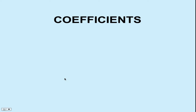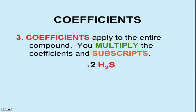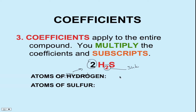Rule number three deals with coefficients. Coefficients are the big numbers out in front, whereas the little number behind the atom is the subscript. The rule says we take the coefficient and apply that number to every single element in the whole compound — we're going to do a little bit of multiplication. So if we're figuring out the number of hydrogen atoms, we take two times the subscript of two, which gives us four. And then we have two of the other element, because two times the imaginary subscript of one is two.